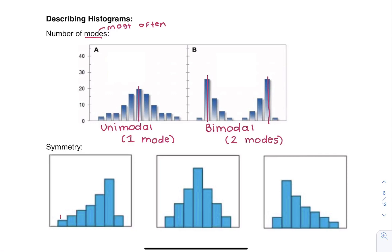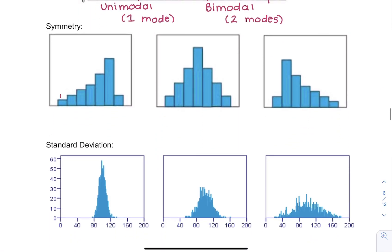Another way we can describe data or histograms is with symmetry. So if we look at the overall shape of these values, the first easiest one to see is the middle one. So this one is symmetrical.